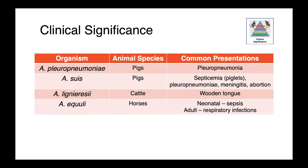The four species we'll discuss today are: Actinobacillus pleuropneumoniae, which causes pleuropneumonia in pigs; Actinobacillus suus, which also causes pleuropneumonia in pigs along with septicemia in young piglets, meningitis, and abortion; Actinobacillus lignieresii, which causes wooden tongue in cattle; and Actinobacillus equuli, which causes sepsis in neonatal foals and primarily respiratory tract infections in adult horses.